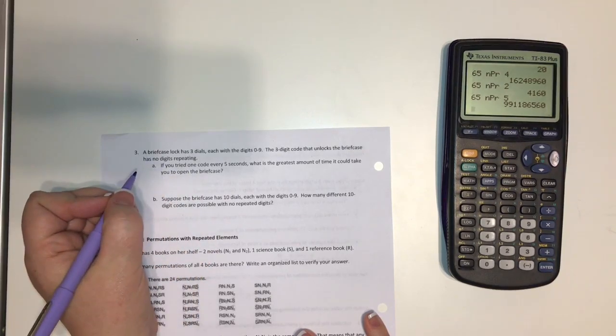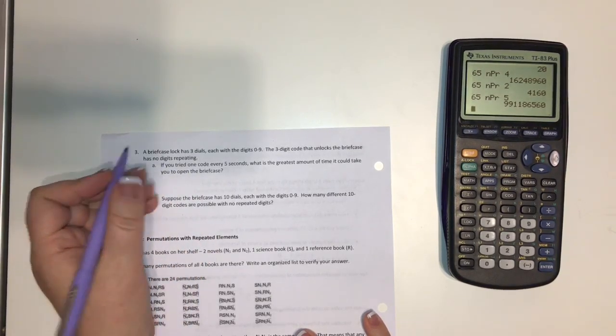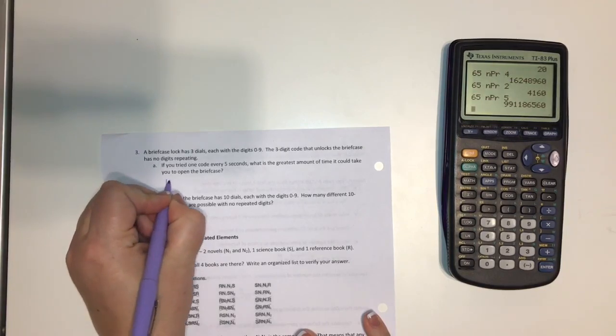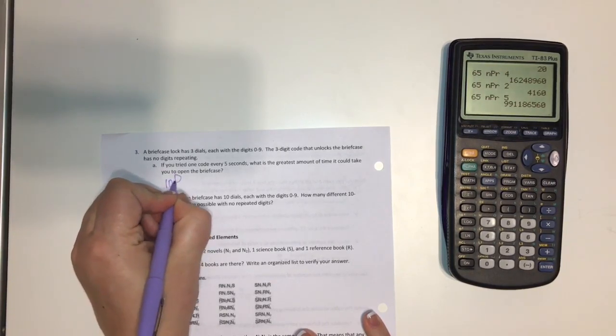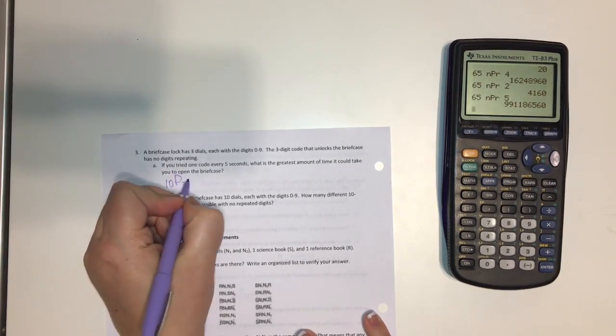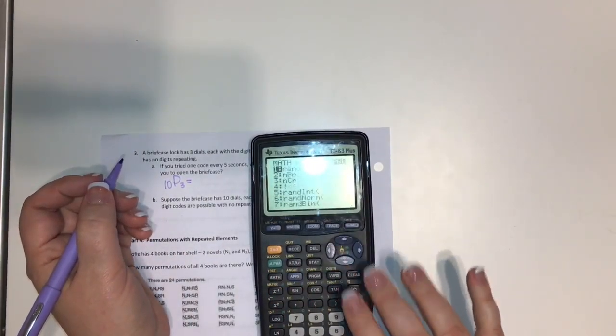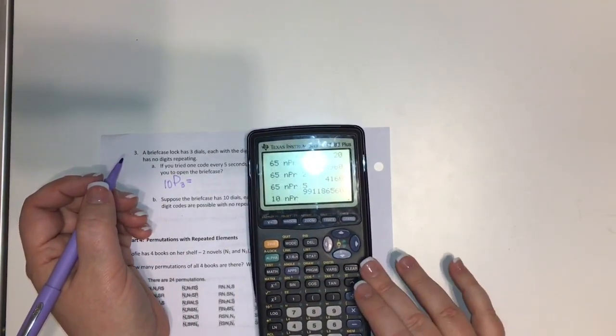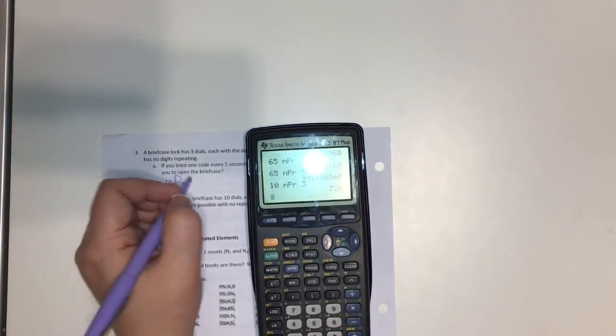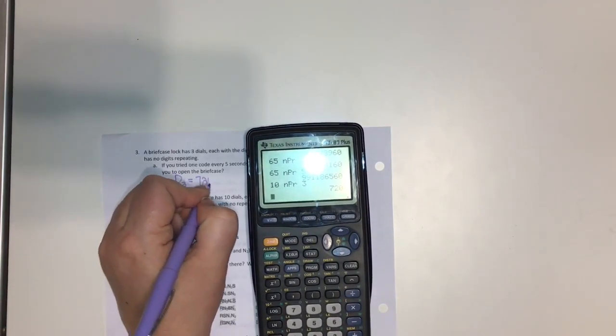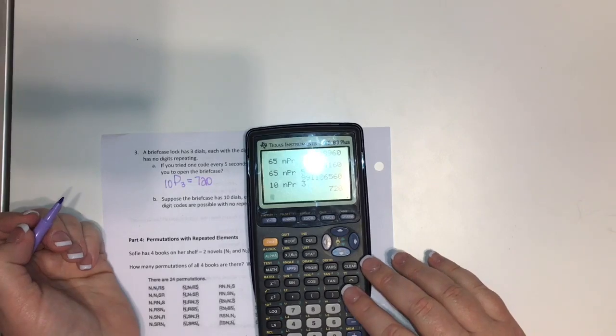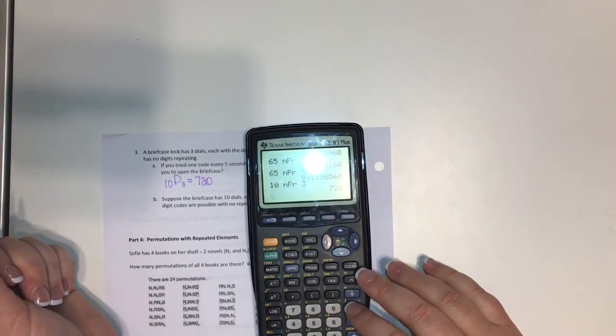So just be careful when you think of combination. Okay. So let's find out how many there are. So we have 10 different options and we're going to have three of them. So 10 and then we put the NPR in and 3.